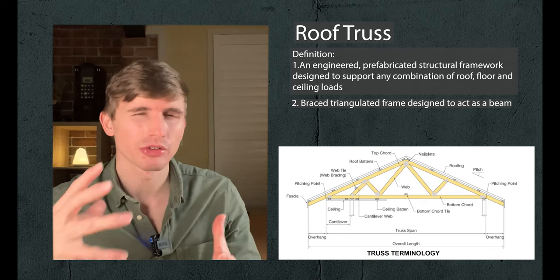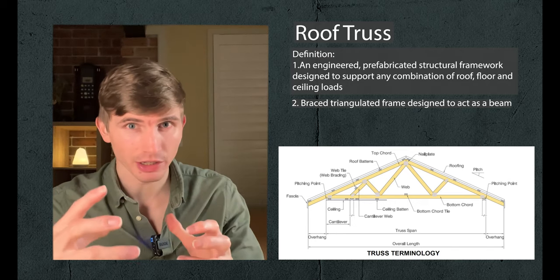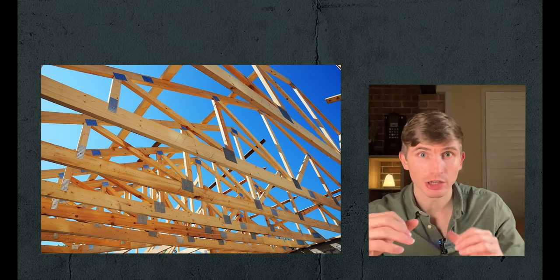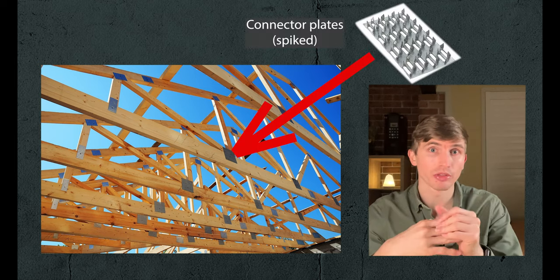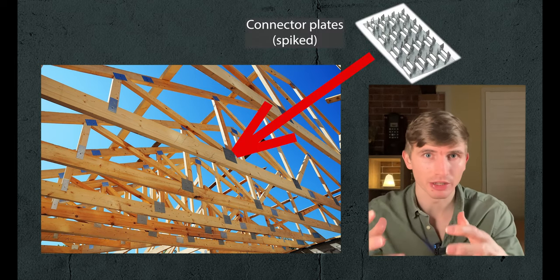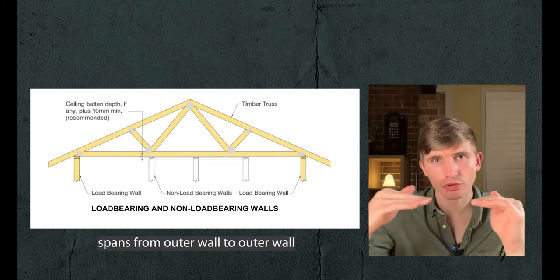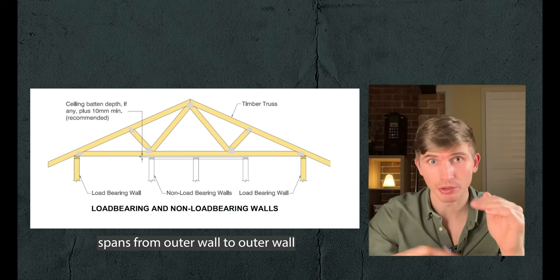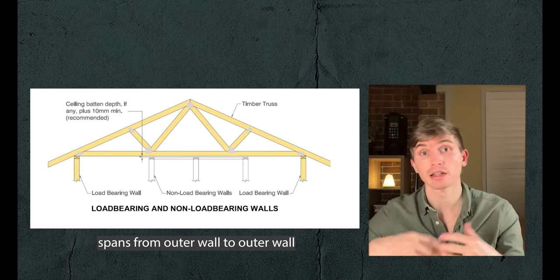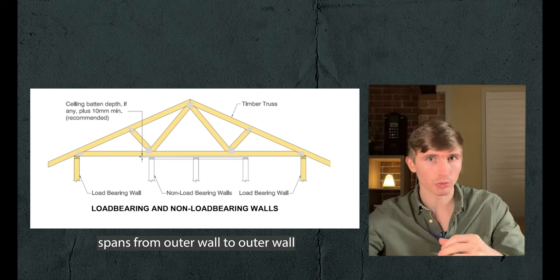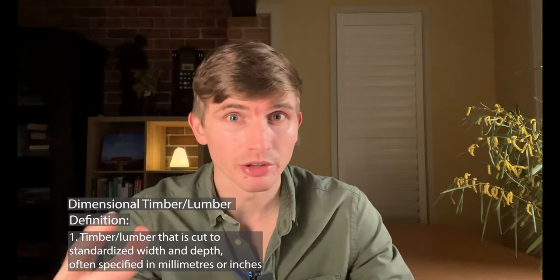Now onto trusses. Trusses are made of much skinnier and shorter pieces of timber, which are pinned together with spiky metal plates. The web is usually engineered so that the roof truss doesn't actually need any load-bearing walls beneath — they act like a large beam spanning from one outer wall to another. They're very strong, they speed up construction, and they cut down on the amount of large dimensional timber needed to build a house.